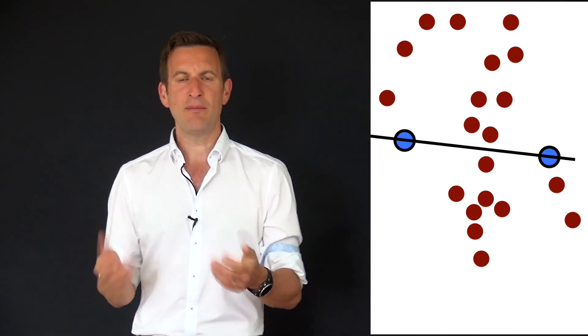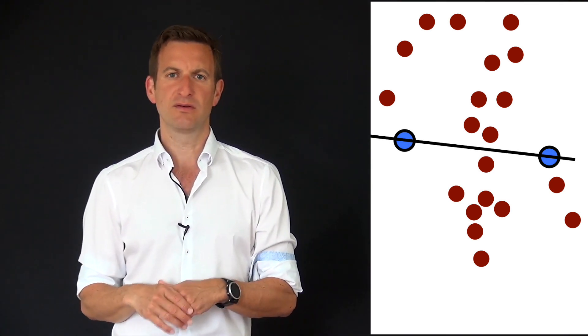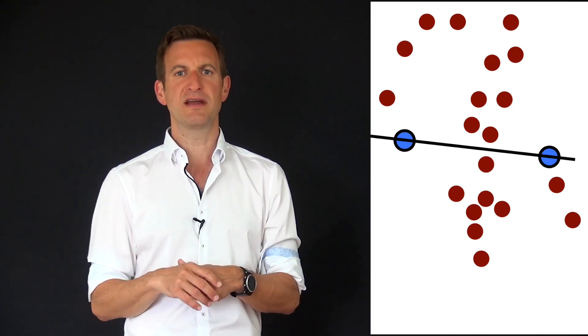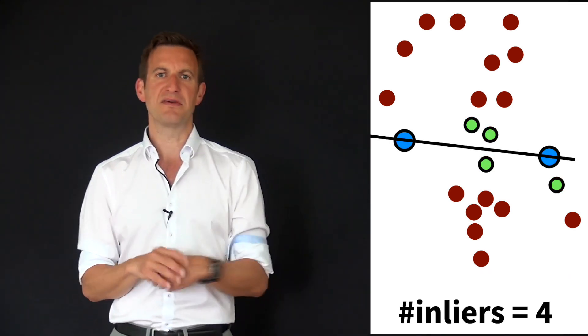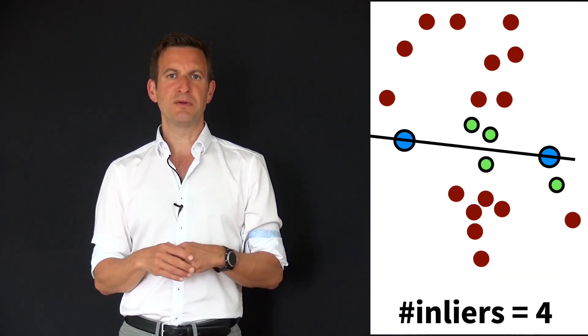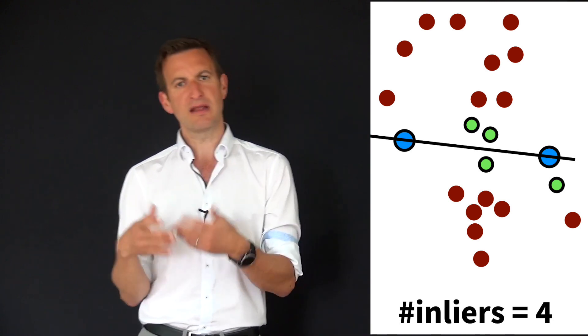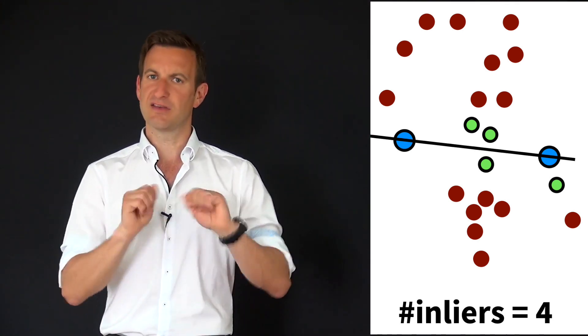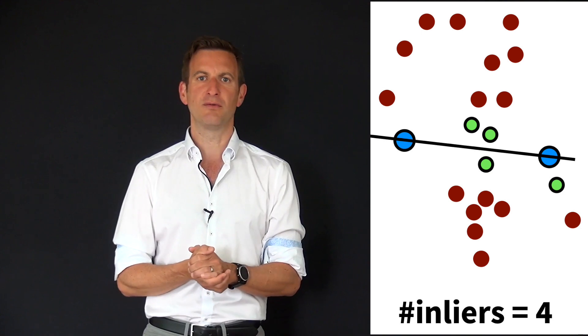And then I simply check how many of the remaining data points, so all the data points except the two that are sampled, will agree with this line. In this example this would be four data points which either lie on the line or close to the line. So perfect. This model gets a score of 4.